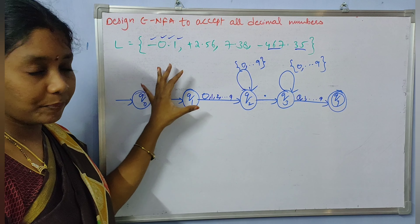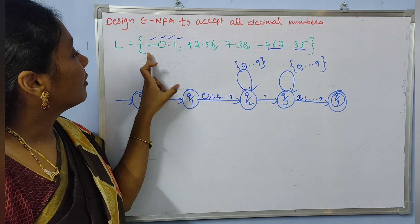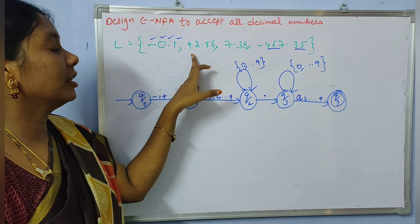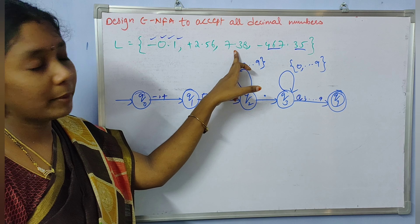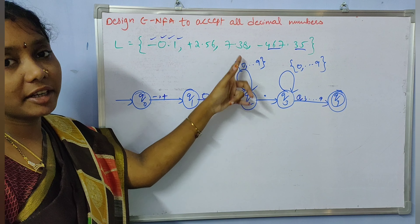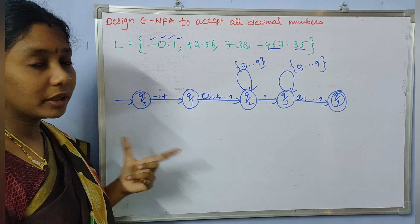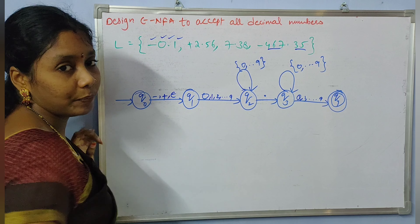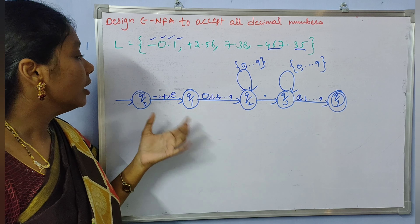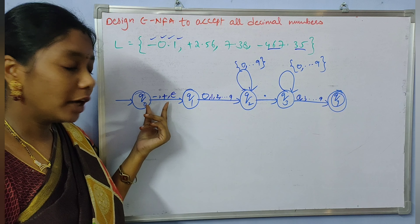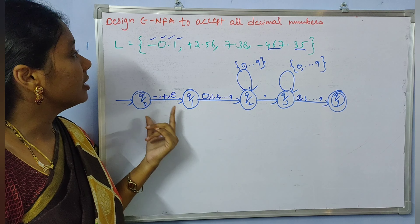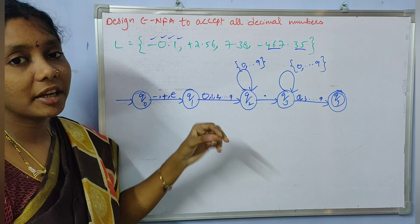This is the NFA for the given problem. But observe that for some examples you have a minus or plus sign, while decimal numbers like 7.38 may not have any sign. So without consuming any sign we also need to accept a decimal number. Without consuming any input, we need to add an epsilon transition here — since we are constructing an epsilon-NFA, we can have a transition without consuming any input symbol — so you can reach state Q1 without reading any symbol.